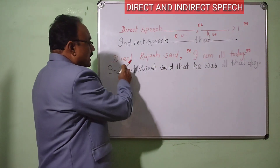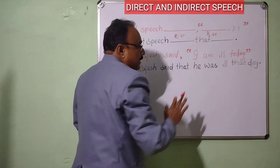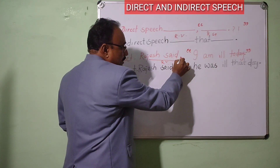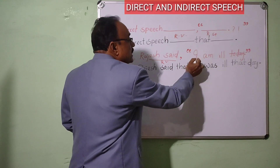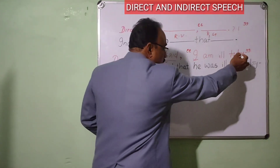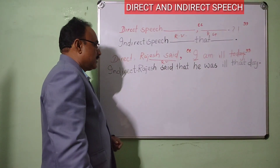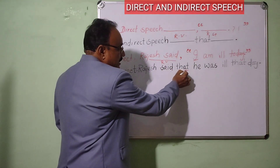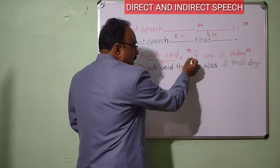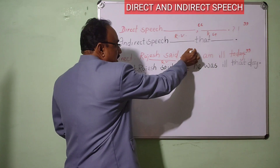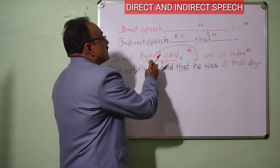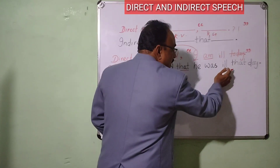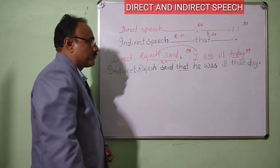Look at the example. Rajas said, 'I am ill today.' Here is a reporting clause, separated by a comma, then the beginning of the reported speech is a capital letter, then full stop, within inverted commas. But when you change to indirect speech, look at this: Rajas said — connected by two clauses. Then 'I' changes into 'he', because 'I' refers to Rajas. 'Am' refers to 'was' — the tense changes. And 'today' changes into 'that day'.